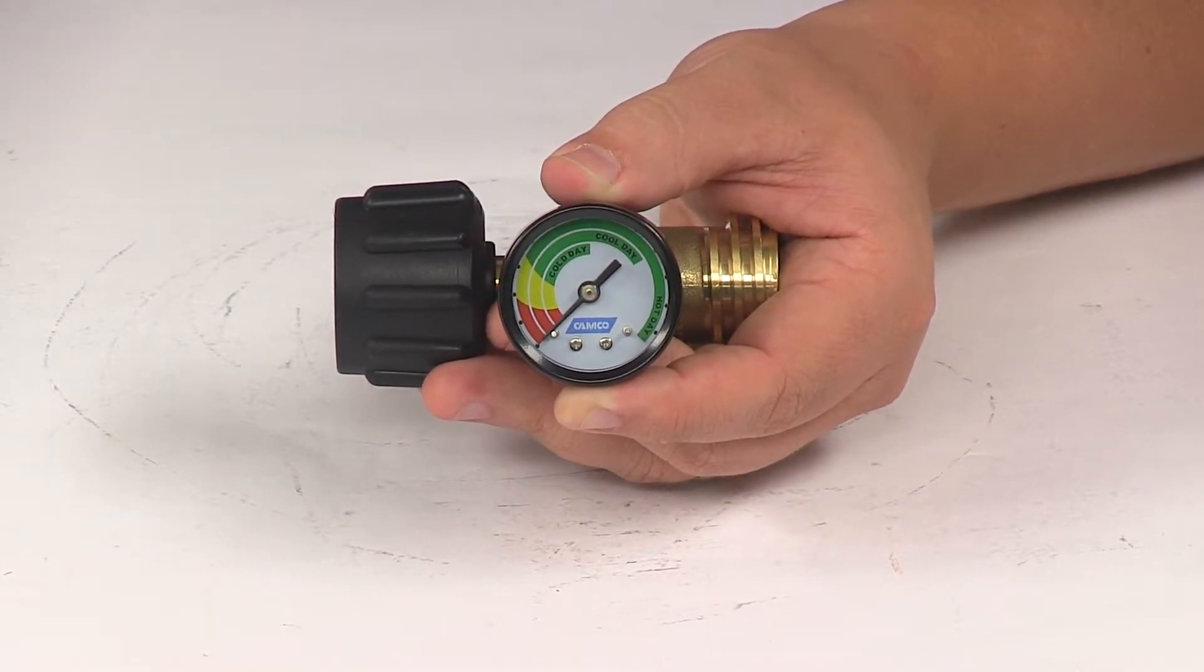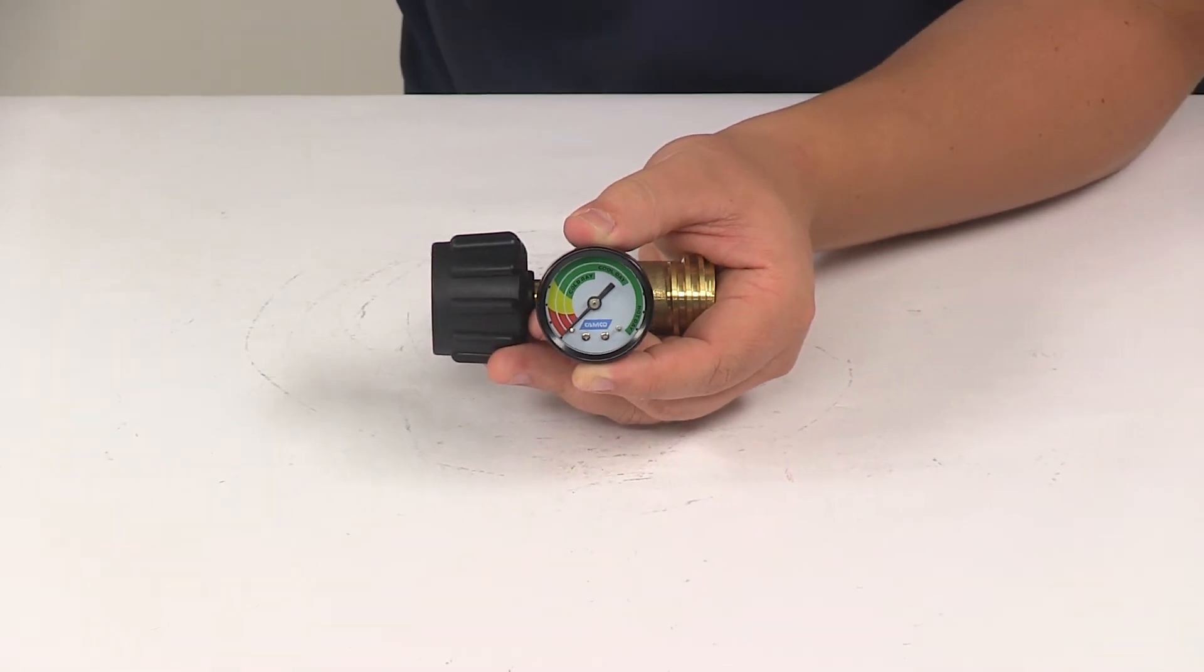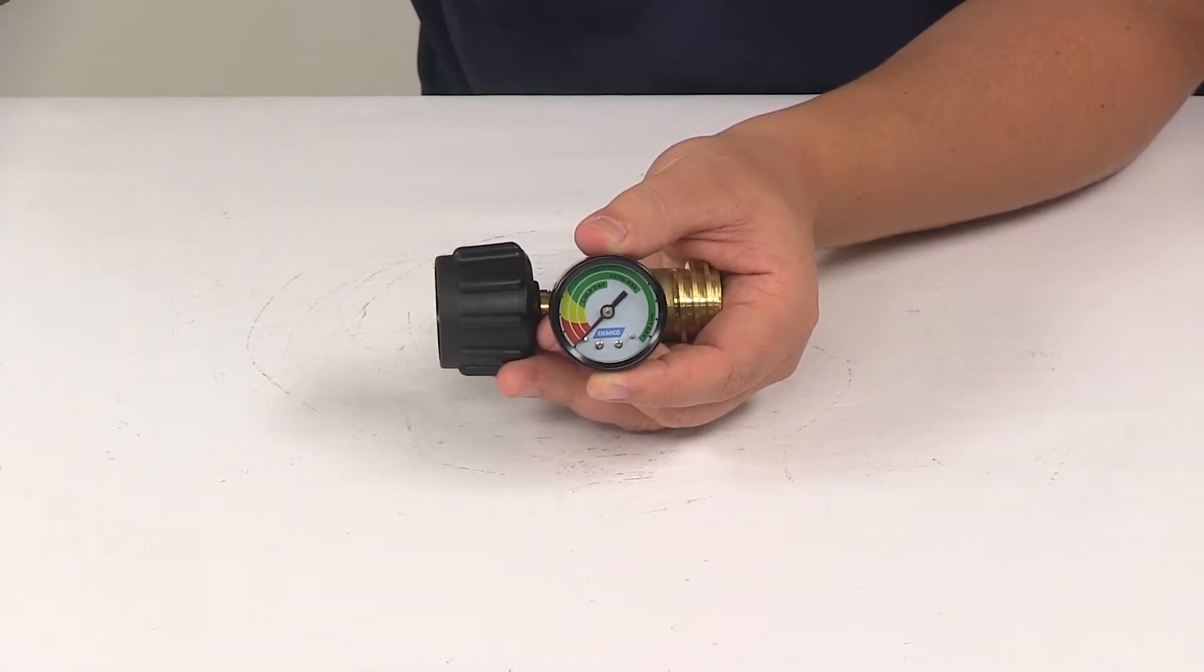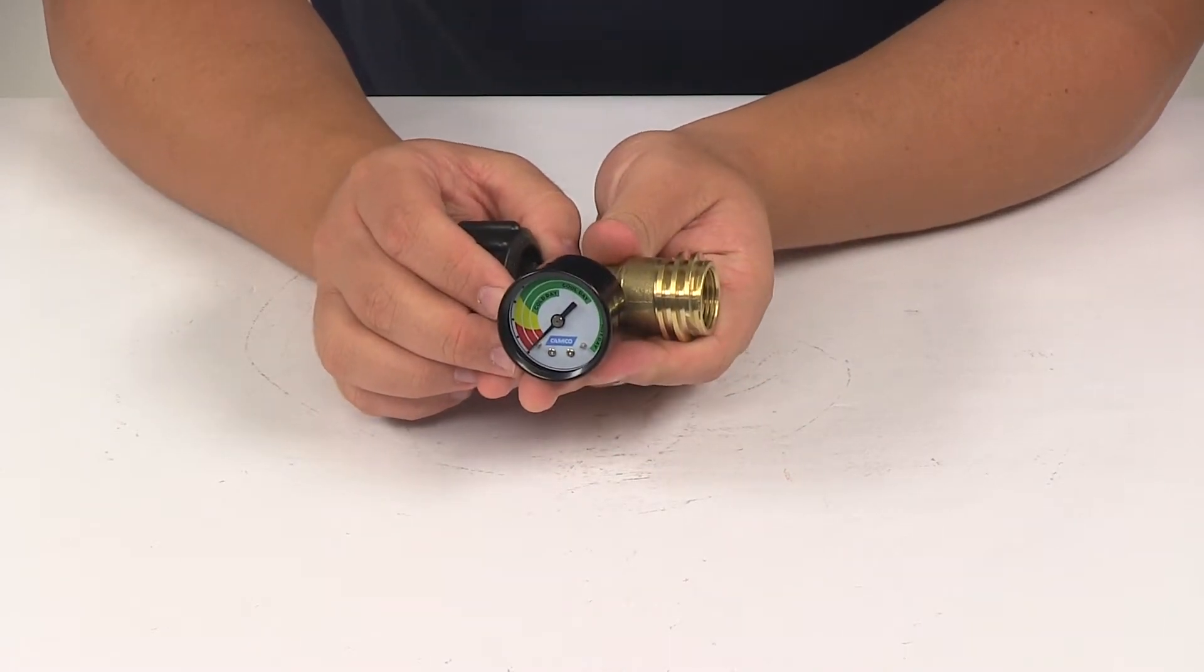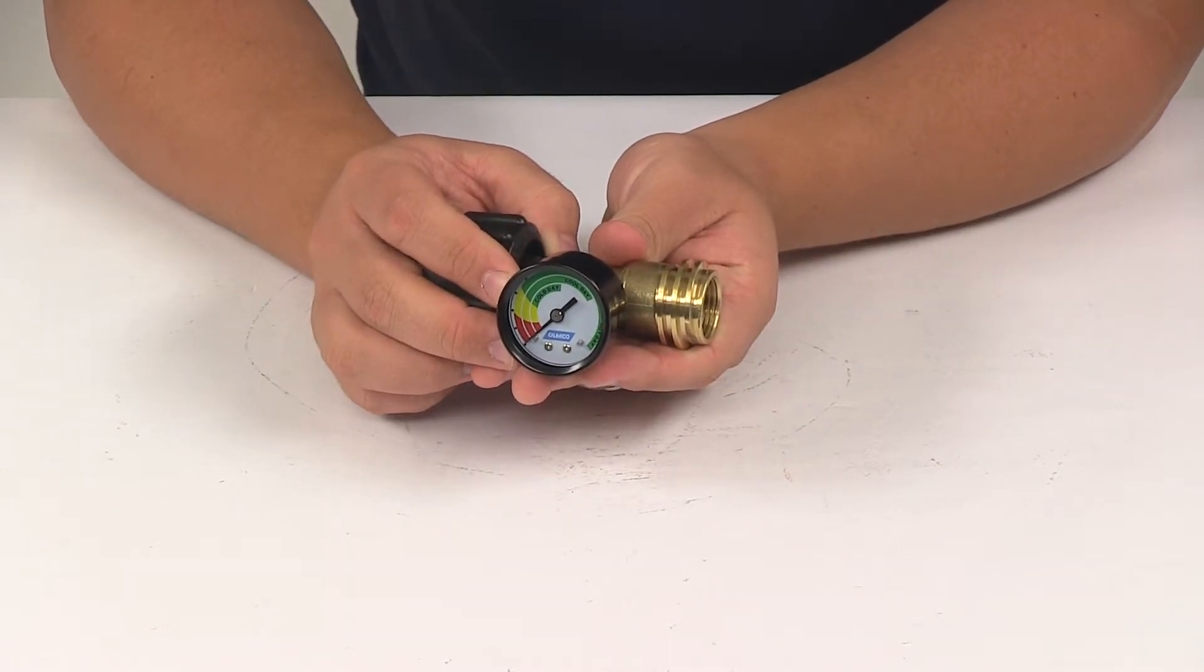Now to use this as a system to check for leaks, you want to make sure that your propane cylinder valve is closed and that the burner controls on the appliance are off.